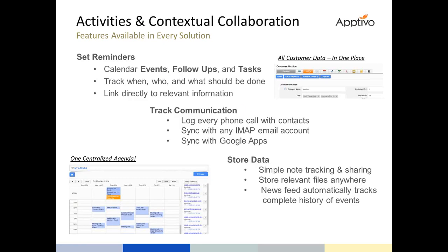The whole platform, regardless of which applications you use, has a set of common features called contextual collaboration. One key issue is that if you're using multiple systems, you might have a calendar in three different places. Aptivo solves this with common collaboration features: a calendar, a task list, an area to manage emails, log phone calls, set reminders, and store information — whether in files like Word documents, PowerPoints, or just notes typed during a customer call.